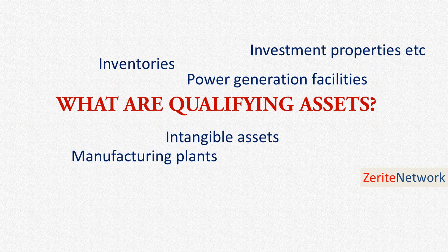Qualifying assets may include inventories, manufacturing plants, power generation facilities, intangible assets, investment properties, etc. Note that financial assets and inventories that are manufactured or otherwise produced over a short period of time are not qualifying assets.